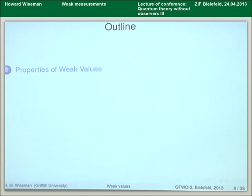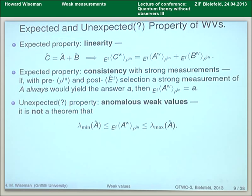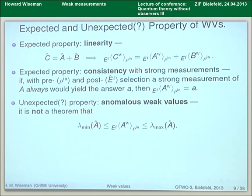What can we say about these things? By construction, weak values obey the property of linearity: if operator C is the sum of operators A and B, then the same is true of their weak values, as long as they're post-selected in the same state. There's a property of consistency: if in a given pre- and post-selection situation a strong or projective measurement of observable A in the middle was guaranteed always to yield a particular answer, little a, then the weak value under a different scheme — where you don't do the strong measurement but just a weak measurement — would also come out to be a. That's sort of what you'd expect, and it does.